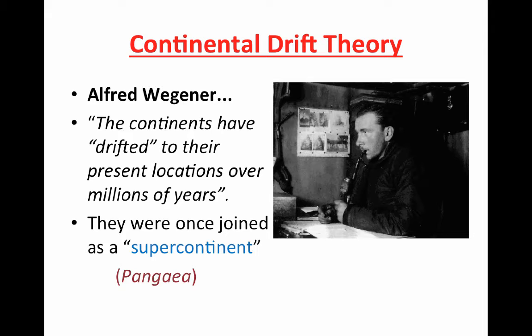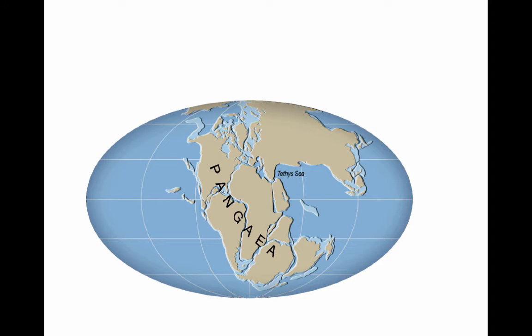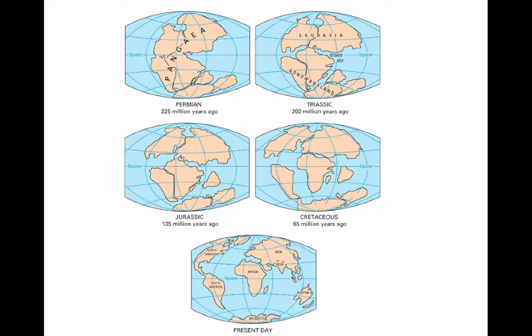Now we know that that is not the case. Here's our Pangaea, meaning 'all Earth.' Over time it spread out until we're here. Scientists hypothesize it will continue to move until, millions of years from now, it rejoins into another giant supercontinent.